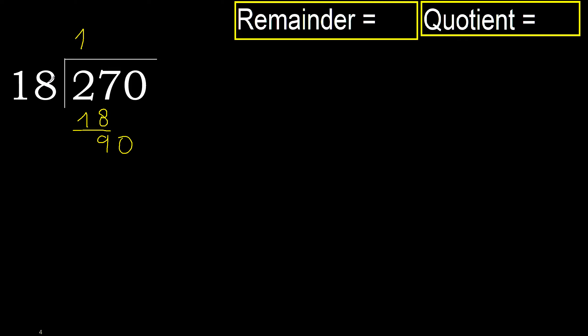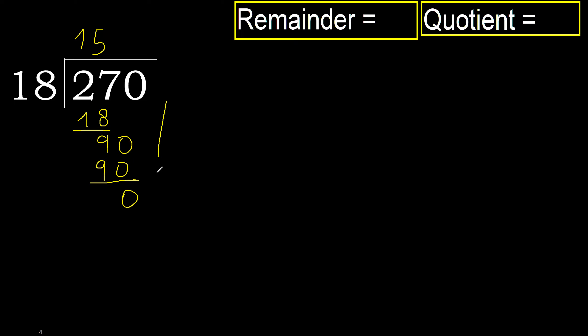90. 18 multiplied by 5 is 90 — 90 is not greater. Subtract 0. Next.